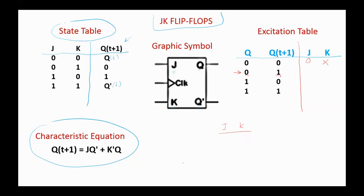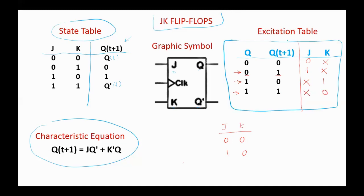From zero to zero, we can have the store state or reset, so J is zero and K is don't care. From zero to one, we either have the set state one-zero or toggle one-one, so J is one and K is don't care. For one to zero, it's either a reset state zero-one or toggle one-one, so J is don't care and K is one. And the last row, from one to one, it is a store state zero-zero or a set state one-zero, so J is don't care and K is zero. This is the excitation table for the JK flip-flop.